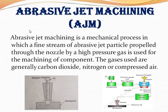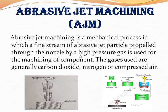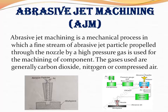Let's start with the first machine — abrasive jet machining. Abrasive jet machining is a mechanical process in which a fine stream of abrasive jet particles is propelled through a nozzle and strikes the workpiece at high pressure. The gases used are generally carbon dioxide, nitrogen, and compressed air, at quite high pressure.